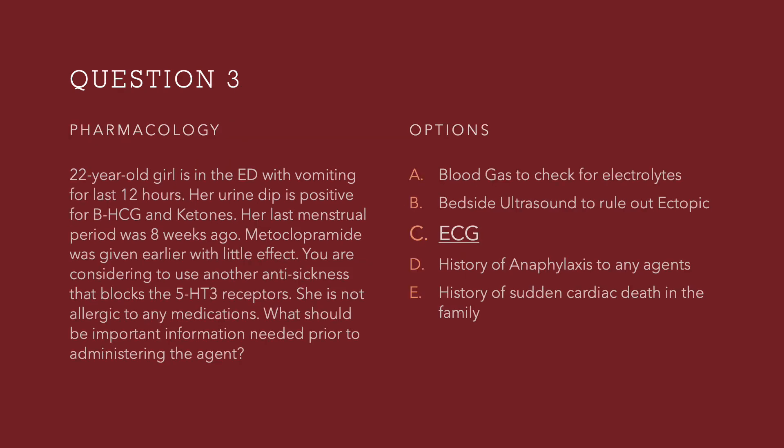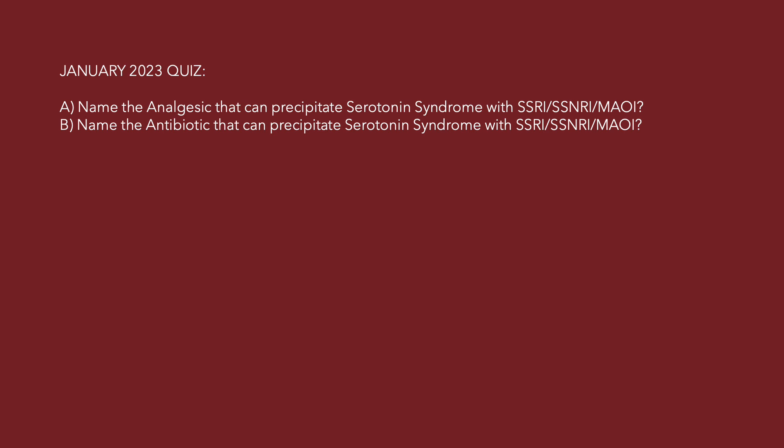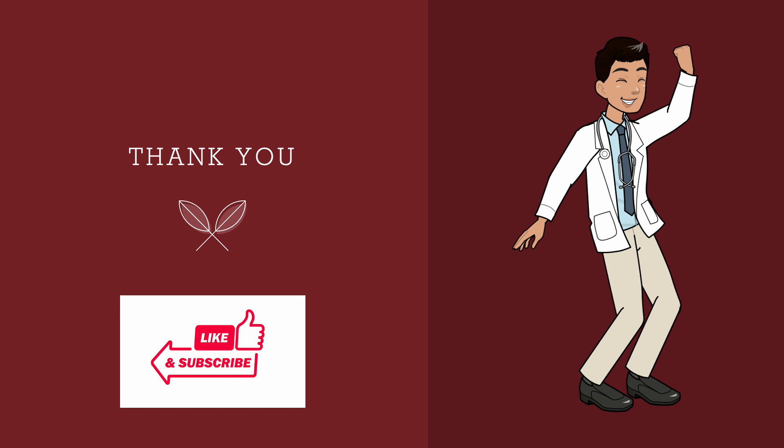The right answer is to get an ECG. History of anaphylaxis to any agent is not the right answer because it is clearly mentioned she is not allergic to any medication. History of sudden cardiac death in the family does not play a role here — though if the ECG shows QTc prolongation, then you can ask about that history. All those who got the answer correct, very well done. This is the last question for today. Before I go, I want to put two questions for you in the comments: name the analgesic that can precipitate serotonin syndrome with SSRIs and SNRIs and MAO inhibitors, and name the antibiotic that can precipitate serotonin syndrome. Put your answers below. Thank you for watching — please like, share, and subscribe.